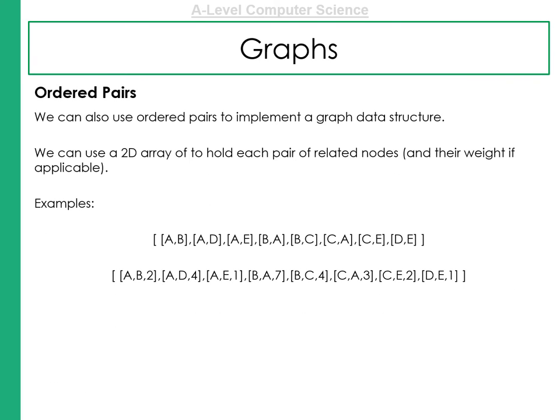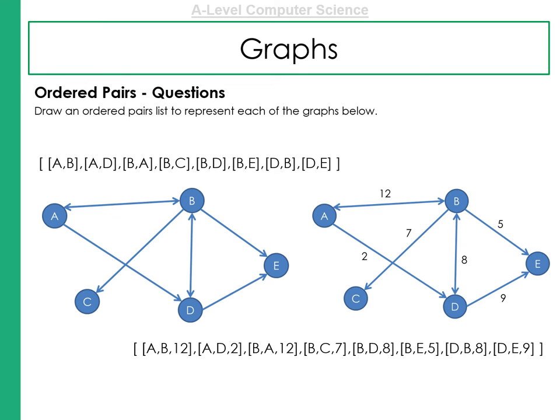The final type of graph is using an ordered pair. We can use ordered pairs to implement a graph data structure fairly simply. And we just use a 2D array in this instance again. Each item holds a pair of related nodes and their weights if it's a weighted graph. There's two examples here on the screen for you. So here's an example. You can see the first one is directional ordered pair graph with no weightings. It's unweighted.